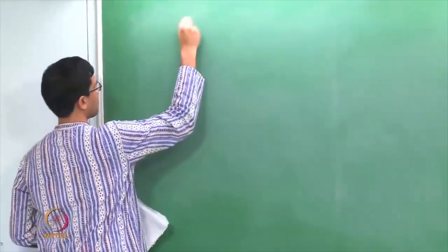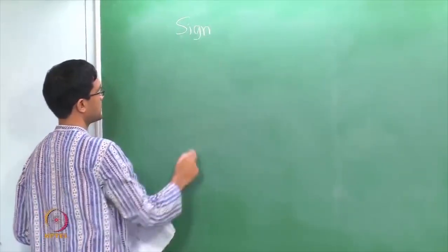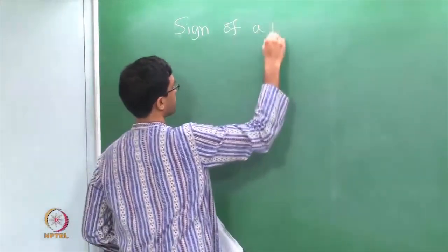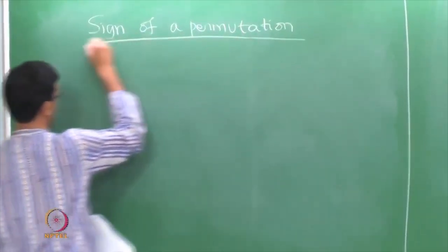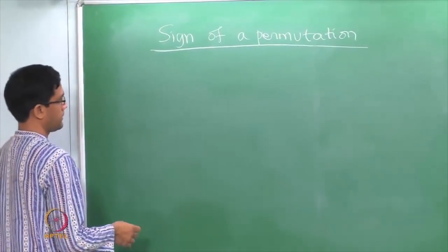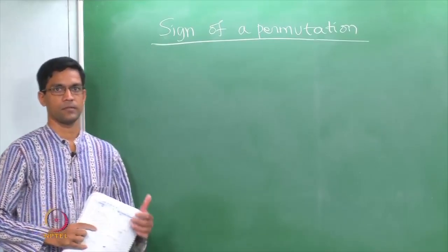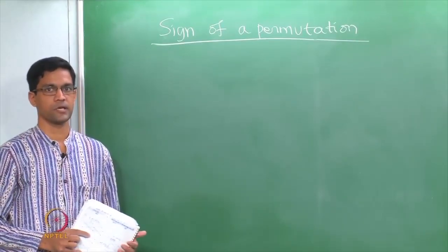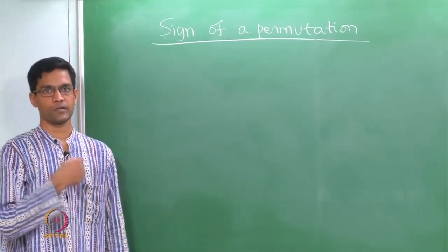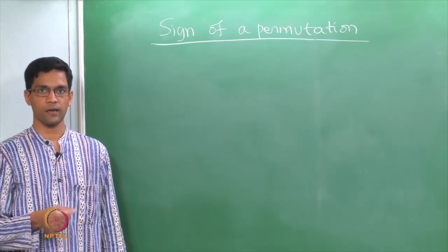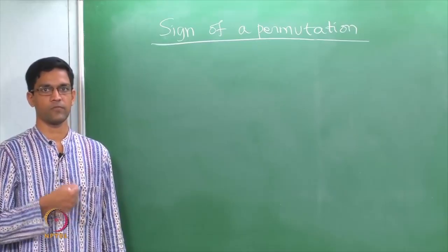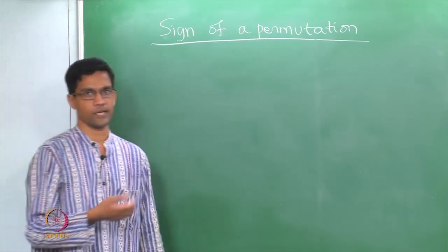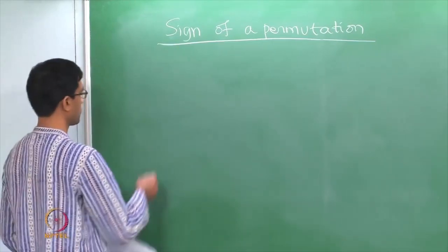Welcome back. Last time we talked about signs of permutations. This was defined using the number of crossings of the permutation, which can be read off from the crossing diagram or tangle for the permutation. If the number of crossings is even, the sign is plus 1; if odd, the sign is minus 1 — also called even and odd permutations.